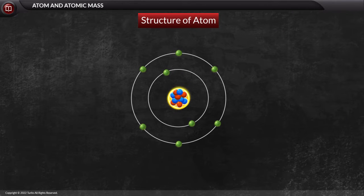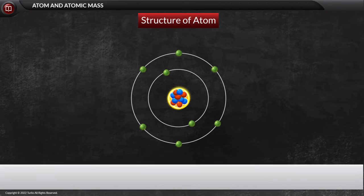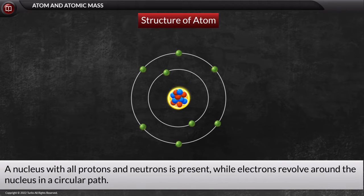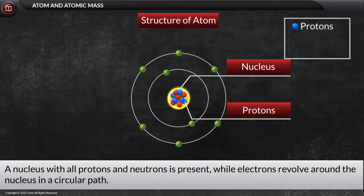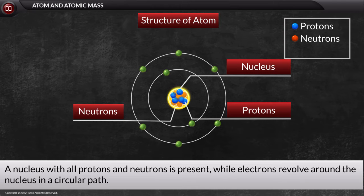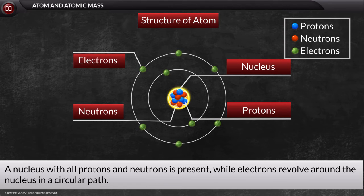Before discussing anything further, let us talk about the structure of an atom. As you can see, at the center a nucleus with all protons and neutrons is present, while electrons revolve around the nucleus in a circular path.